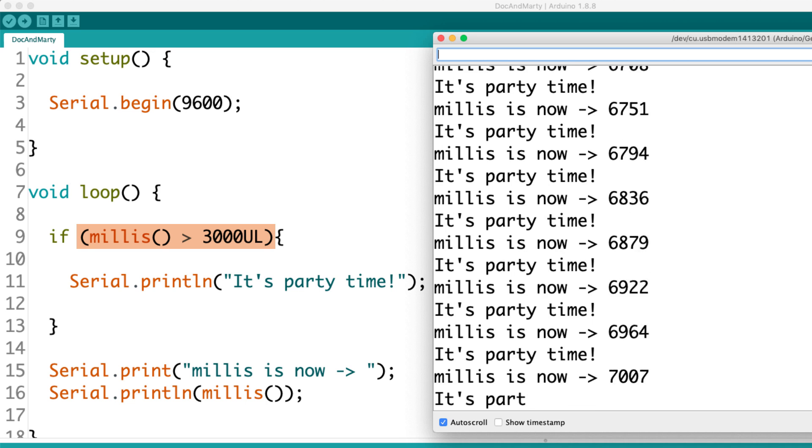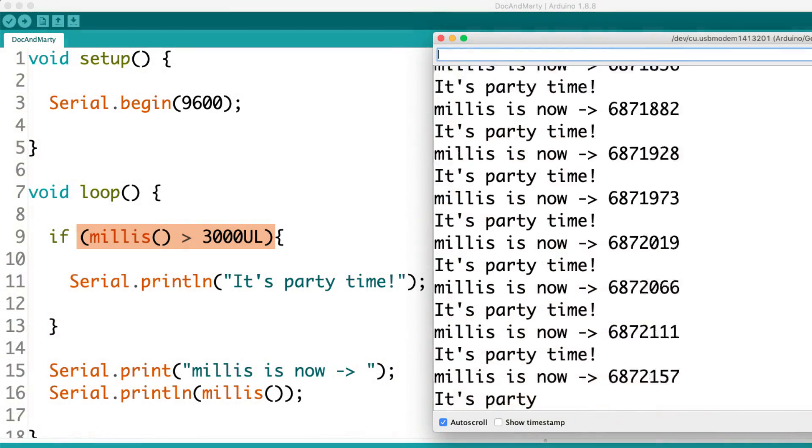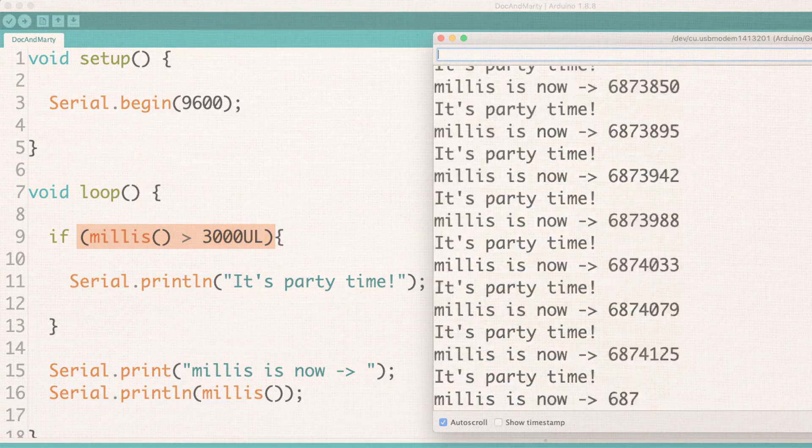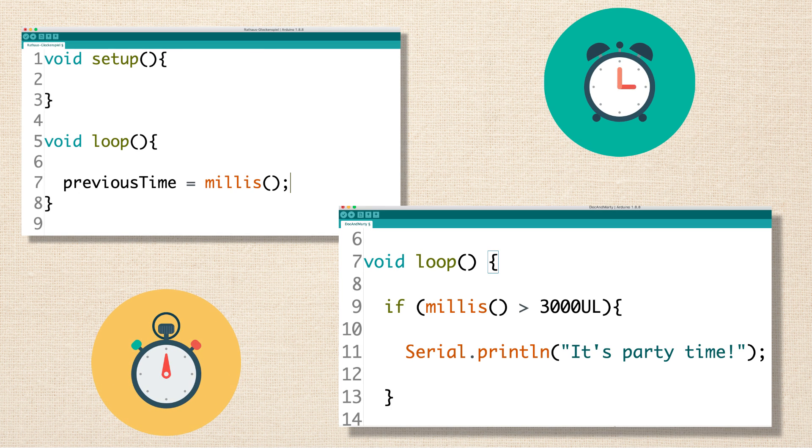For me, it kind of helps me think of that millis call, that function call, I just kind of think about it as a number as opposed to being like a function. It helps me think through it. So those are two ways that you can get the counter timer value using the millis function.